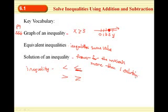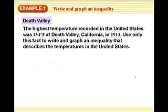Okay, so let's do some of these. See what we do first. Example number one. Write and graph an inequality. The highest temperature recorded in the United States was 132 degrees Fahrenheit at Death Valley California in 1913. Use only this fact to write and graph an inequality that describes the temperatures in the United States.